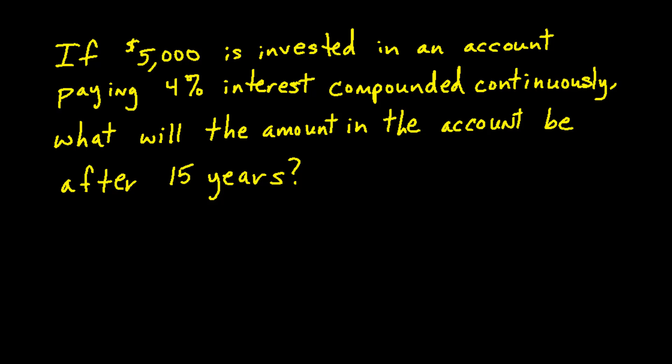For this problem, you will need the compounded continuously formula. A, which is the amount in the account, will equal P, which is the principal balance of $5,000, multiplied by the number e to the exponent r times t. If your calculator does not have a method for you to type both of the exponents r and t at the exponent level, then you will definitely want to put parentheses around the r times t in order to get the correct answer. So let's substitute the values. A is what we are solving for. P is the $5,000 principal. E is the e to the x button on a calculator. R is the interest rate as a decimal, and 4% is 0.04. T is the time in years, which in this case is 15.